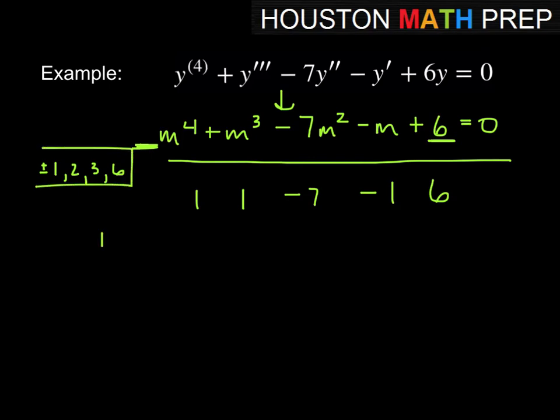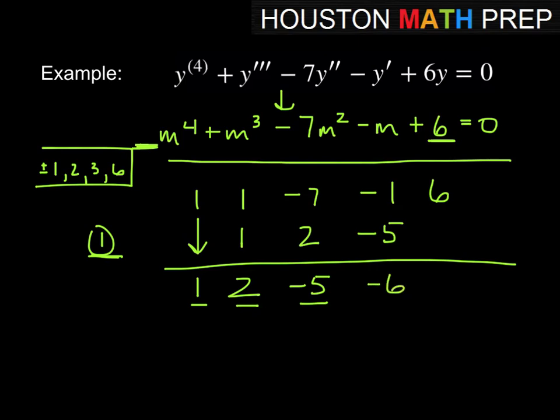I'll test positive 1 first. So if it's been a long time, remember we bring down the first one. So we'll keep the 1 and then multiply times what's outside and write it in the next column and add. So 1 times 1 gives us 1. We add and get 2. 2 times 1, we get 2. We add, we get negative 5. Negative 5 times 1, we get negative 5. That add down gives negative 6. Negative 6 times 1 gives negative 6 and 0. So we know that 1 is a 0.